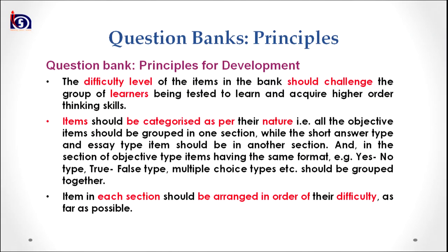While writing items, we should keep in mind that items should be categorized as per their nature. All objective-type items should be grouped in one section, while short answer and essay-type questions should be in another section. Within objective types, items with yes/no, true/false, or multiple choice answer categories should be grouped together so that the question bank looks logical in its nature.